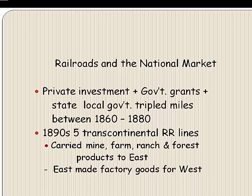This opened vast new markets and areas of commercial farming and created national markets for manufactured goods. By the 1890s, five transcontinental railroads carried western mine, farm, ranch, and forest products back to the east to be manufactured into sellable goods, and then shipped back west.